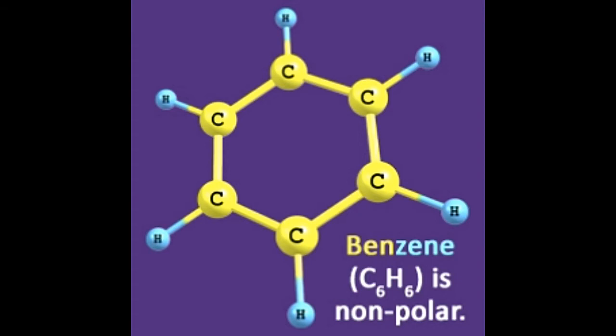Benzene is an organic compound with the molecular formula C6H6. In this puzzle post, we provide you with the polarity and steps to create the Lewis dot diagram of this aromatic compound.